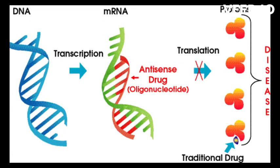Antisense technology is a method of gene regulation that involves the use of molecules called antisense oligonucleotides, or ASOs, to bind to specific RNA molecules and disrupt their normal function. The ASOs bind to the RNA molecules in a sequence-specific manner, preventing the RNA from being translated into a protein.